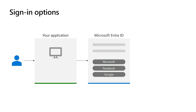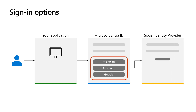Further personalization that CIAM solutions require is how customers log in. When customers interact with your applications, they want to choose their preferred identity, which can be a username and password, or email and one-time passcode. Users can also sign in with their existing social identity like Facebook, Google, and Apple ID, or an enterprise identity like ADFS or GitHub account.